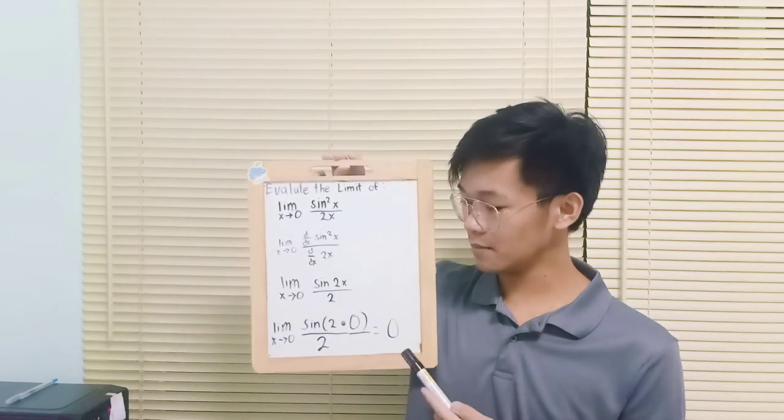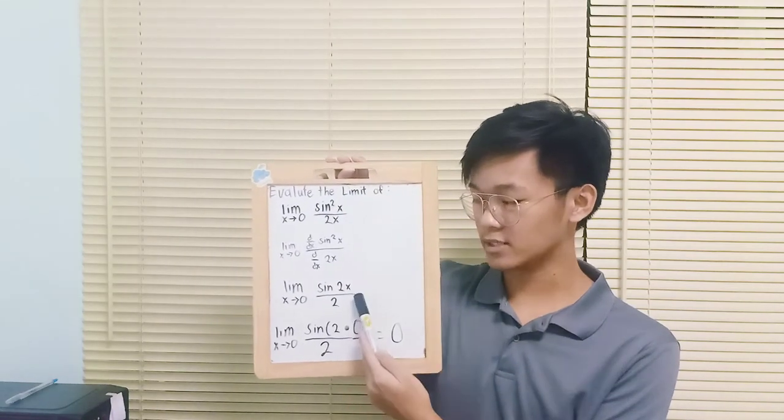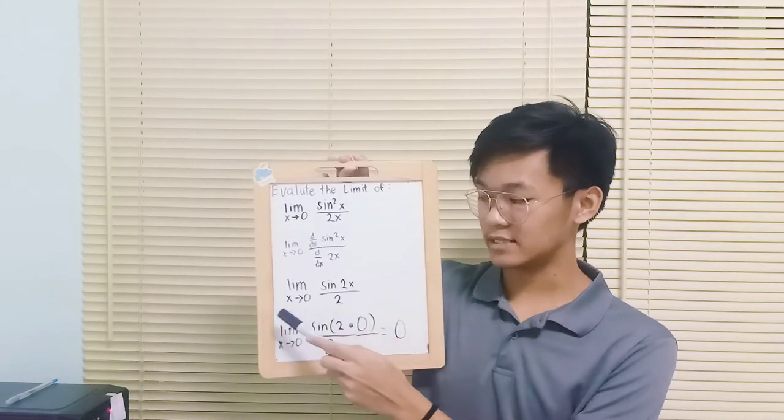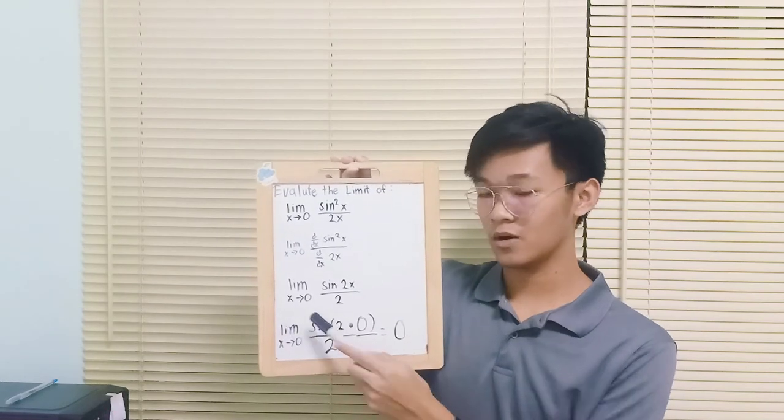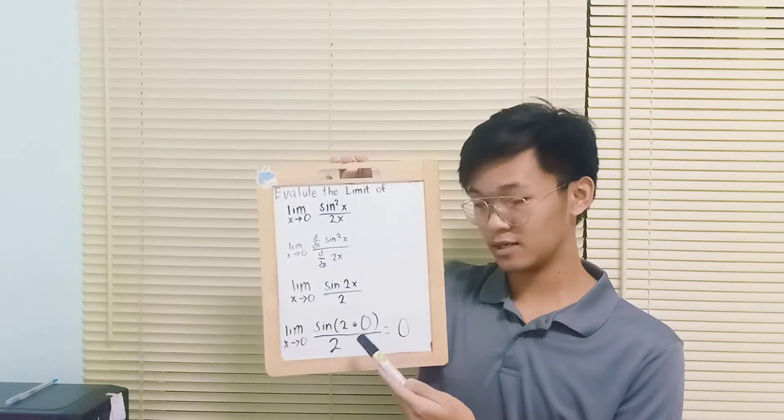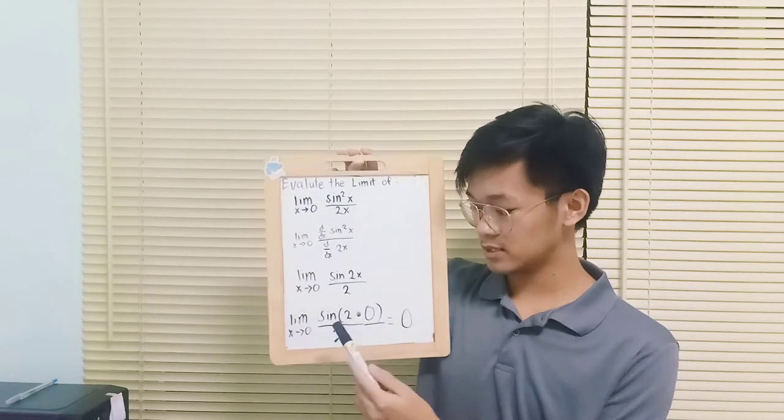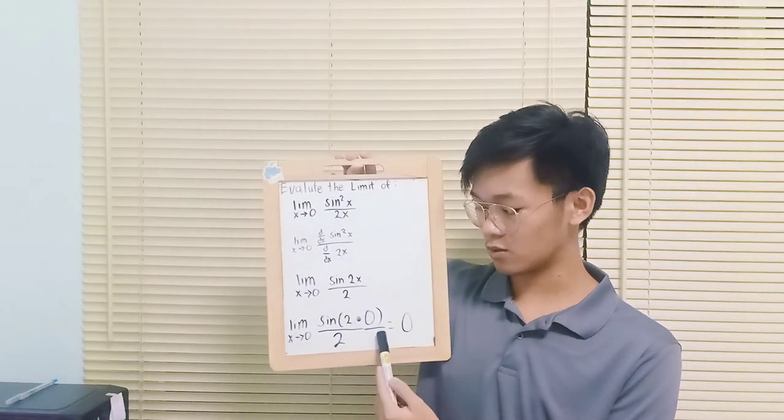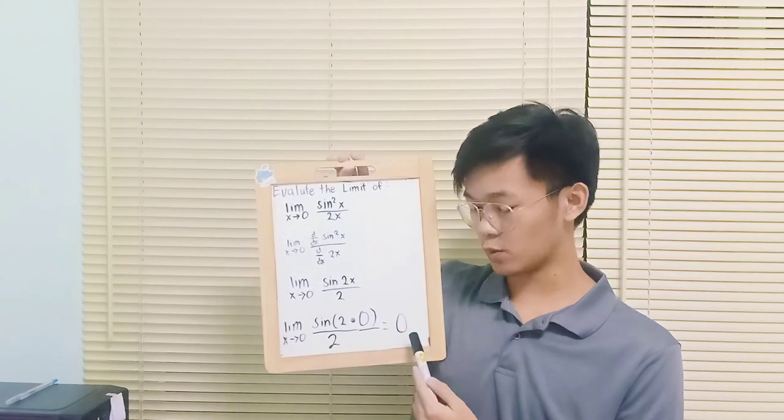With this being in mind, the limit of sin 2x all over 2 as x approaches to zero, we can now substitute the x, which is zero, in the limit.